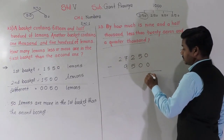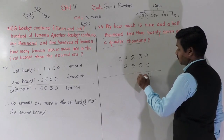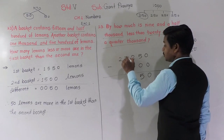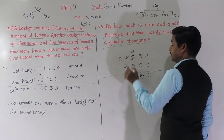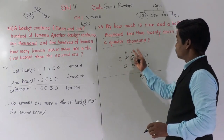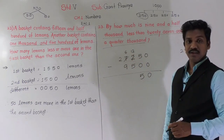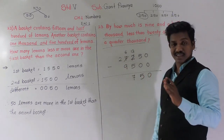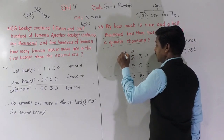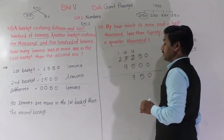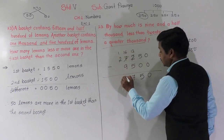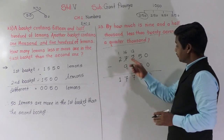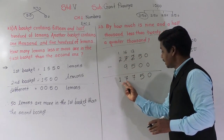So: 0 minus 0 is 0; 5 minus 0 is 5; 2 minus 5 is not possible, so we borrow 1 from 7, making it 6, and 12 minus 5 is 7; 6 minus 9 is not possible, so we borrow again making it 1, and 16 minus 9 is 7; and 1 as it is. So the difference between these two numbers is 17750.